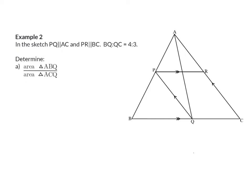Example 2. In the sketch, it is given that PQ is parallel to AC, and it is given that PR is parallel to BC. We are also given the ratio of BQ to QC as 4 to 3, but this time the question is to get the ratio between the area of two triangles: triangle ABQ and triangle ACQ.